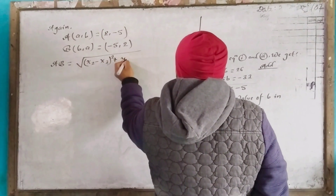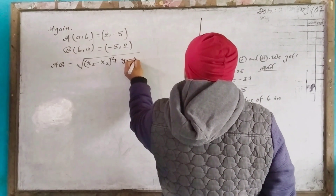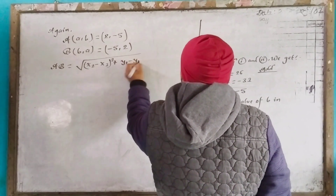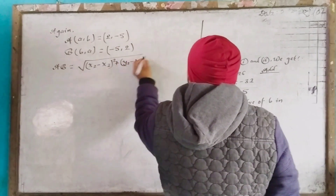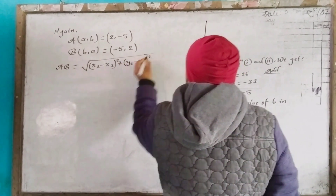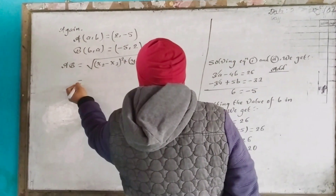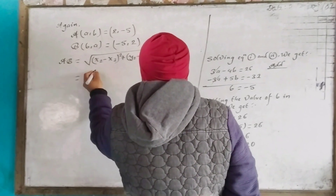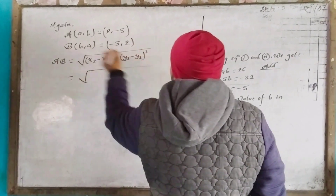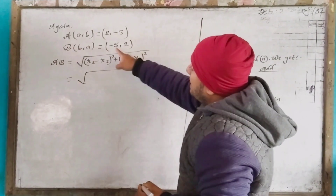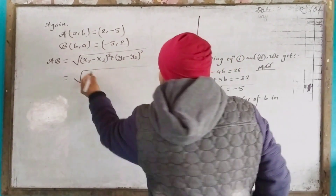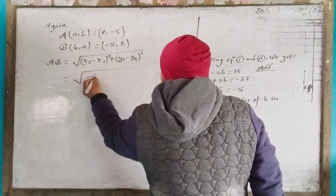AB equals square root of (x2 minus x1) squared plus (y2 minus y1) squared.